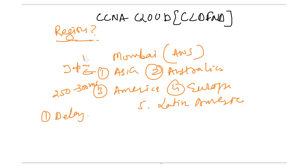100 milliseconds. So delay is a main factor behind choosing the region. Within a region, there can be multiple availability zones. What is an availability zone? It is kind of like small data centers, and there will be multiple